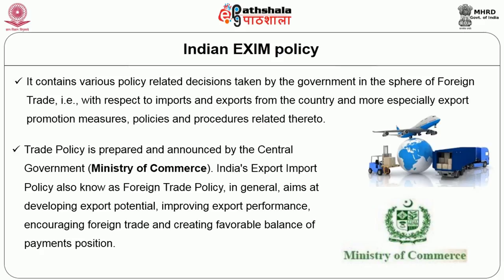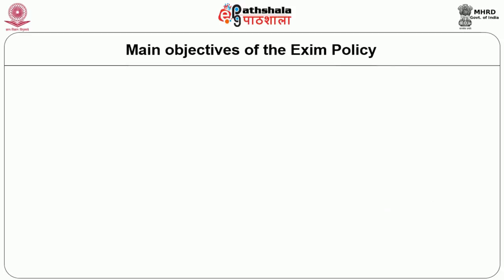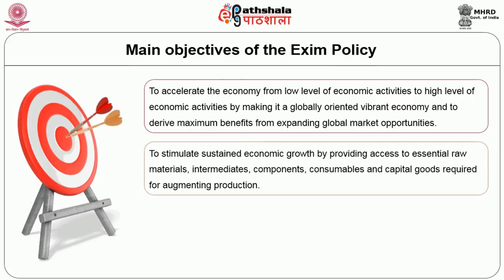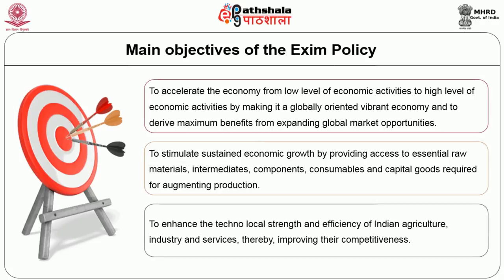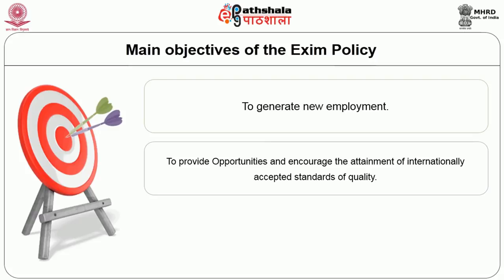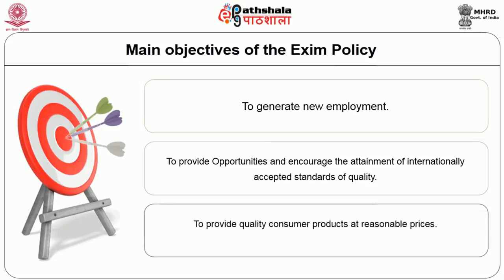Coming to the main objectives of the Exim policy of India: to accelerate the economy from a low level to a high level of economic activities by making it a globally oriented, vibrant economy in order to derive maximum benefits from expanding global market opportunities. The second objective is to stimulate sustained economic growth by providing access to raw materials, intermediate components, consumables, and capital goods required for increasing production. The next is to enhance the techno-local strength and efficiency of Indian agriculture, industry, and services, thereby improving their competitiveness. To generate new employment, to provide opportunities and encourage attainment of internationally accepted standards of quality, and to provide quality consumer products at reasonable price.